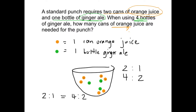So now I have three bottles of ginger ale. Let's draw one more since the question said we need a total of four bottles. Drawing one more bottle of ginger ale means I have to draw two more cans of orange juice. Do we have a total of four bottles of ginger ale inside my punch bowl? One, two, three, four — four bottles of ginger ale. How many cans of orange juice do I have? One through eight — eight cans. So for eight cans of orange juice, I have four bottles of ginger ale.